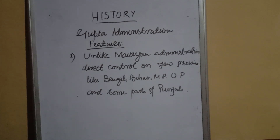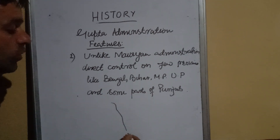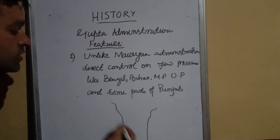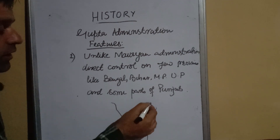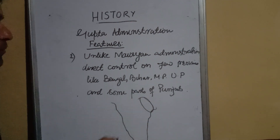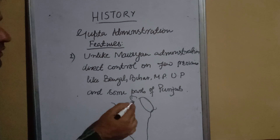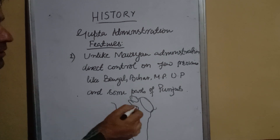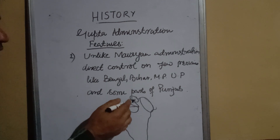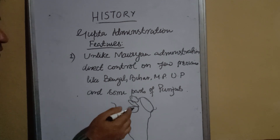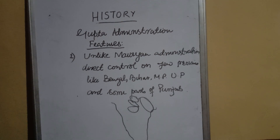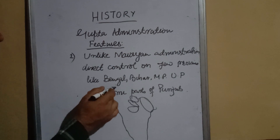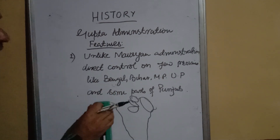Let me show you the location of these states. You can see Bengal here, Bihar here, Madhya Pradesh here, Uttar Pradesh here — the states may appear bigger or smaller, I am just mentioning the points — and some parts of Punjab, approximately here. The Guptas had direct control over these states.